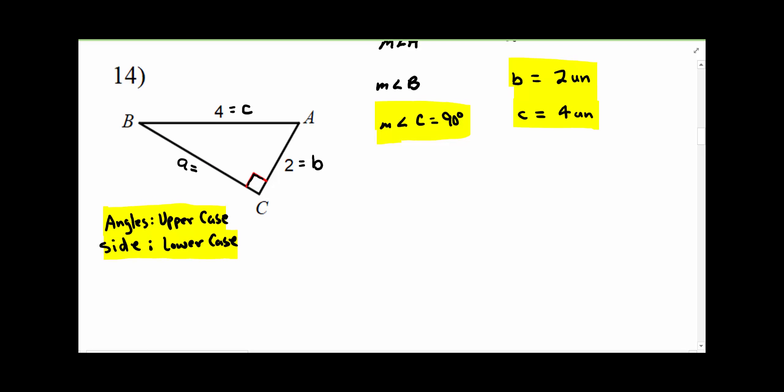We know that this angle is 90 degrees. We don't know the other two angles. So I'm going to start with this missing side right here. Notice, this side's the hypotenuse.